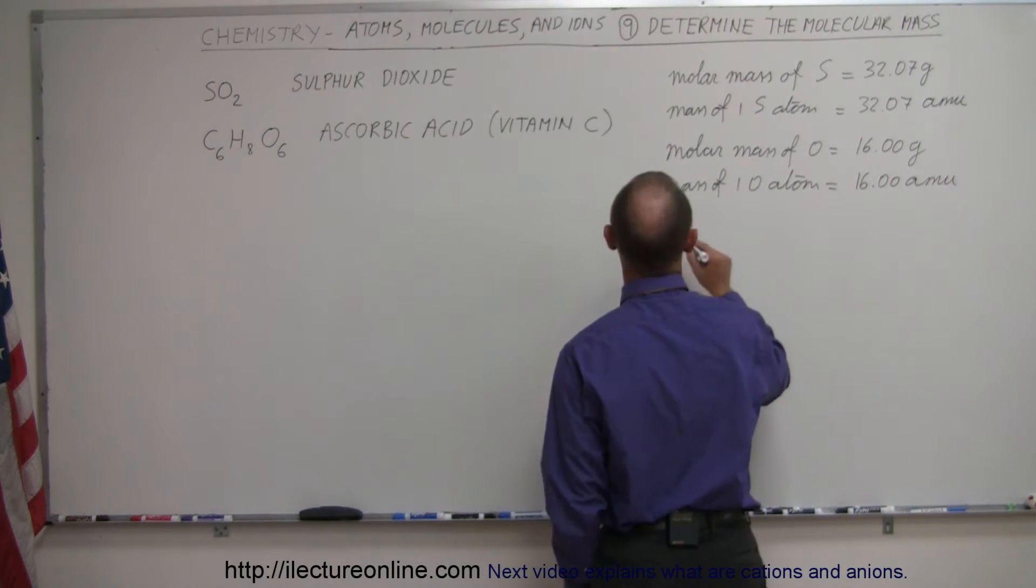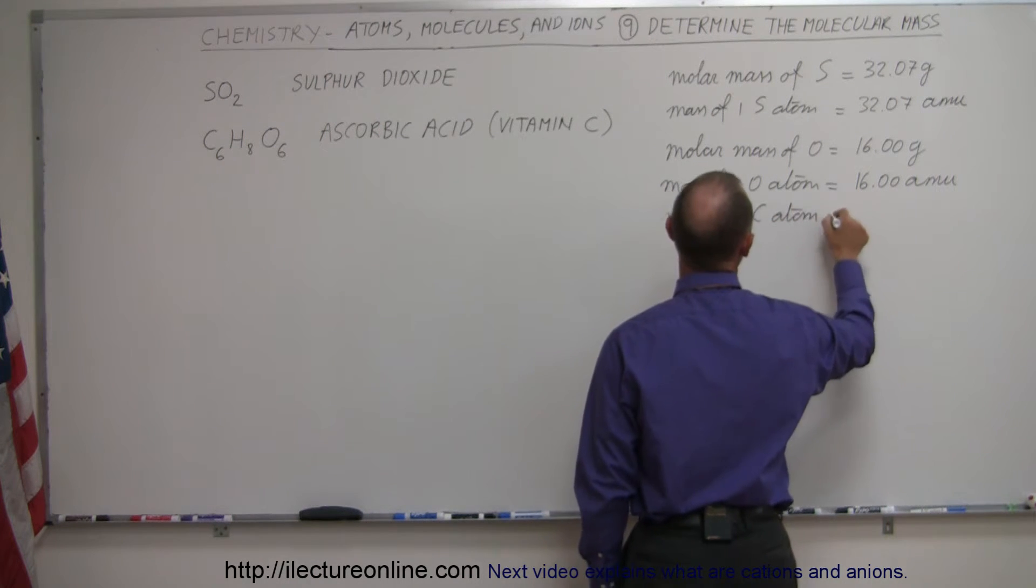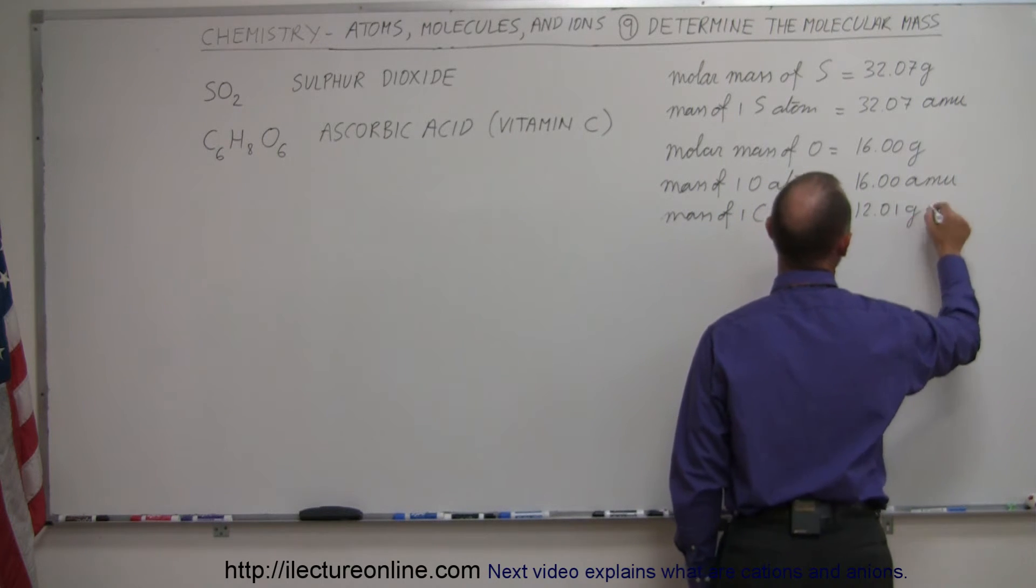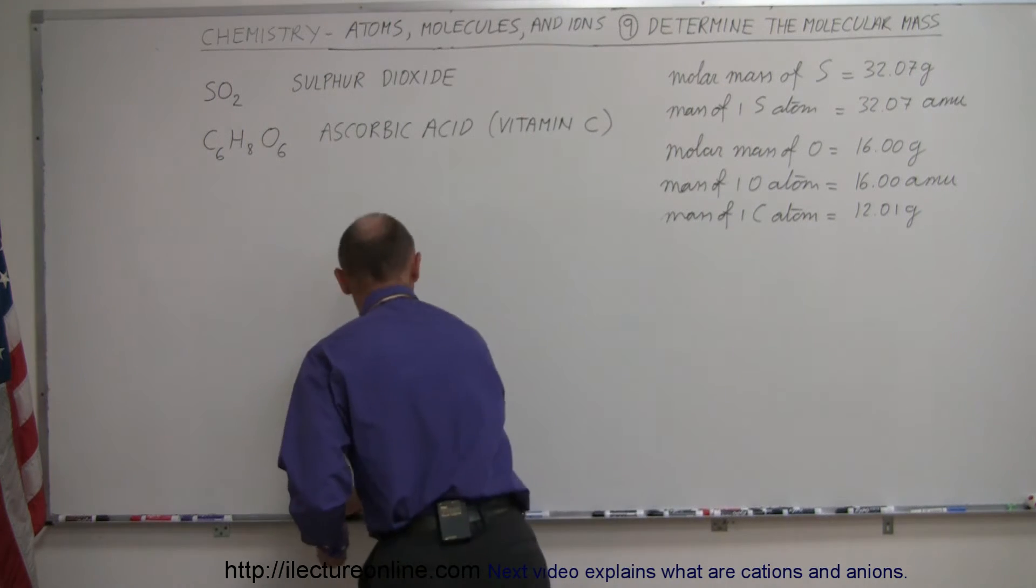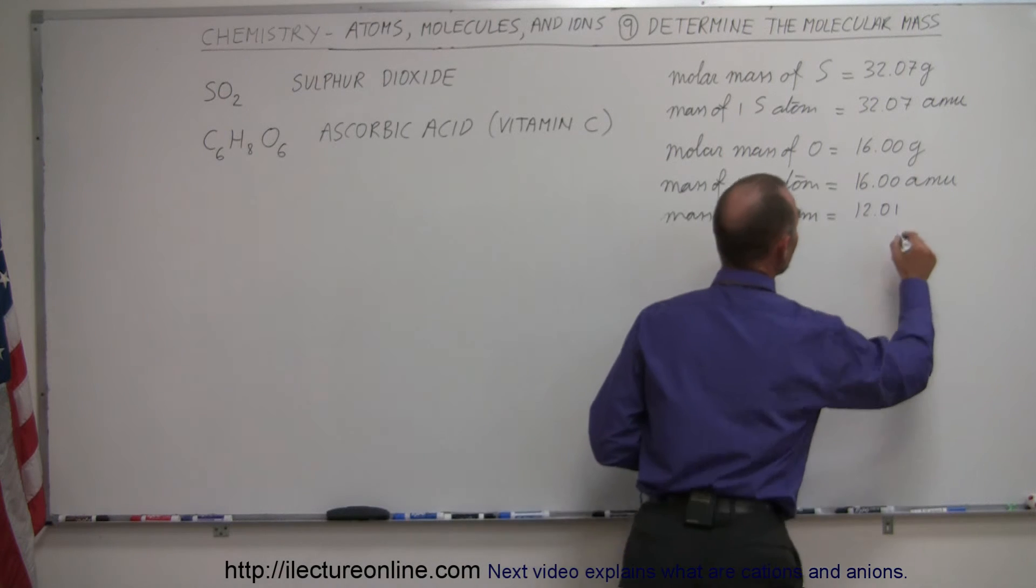So in the very same sense, when we talk about carbon, the mass of one carbon atom, again on average, is equal to 12.01 grams. Remember that by definition, oh, not grams. I'm talking about a single atom now, so we need to use AMUs.